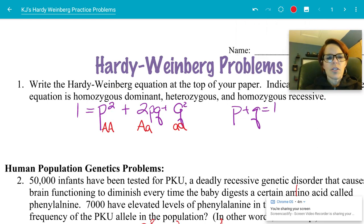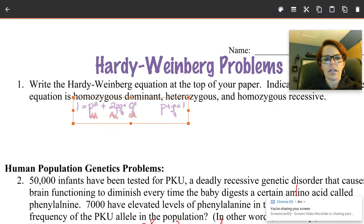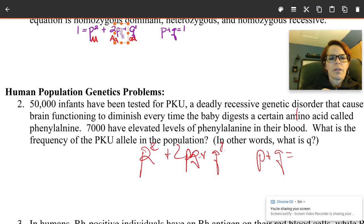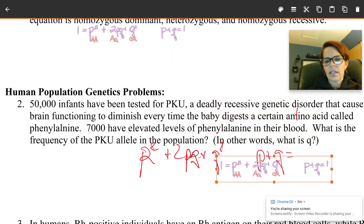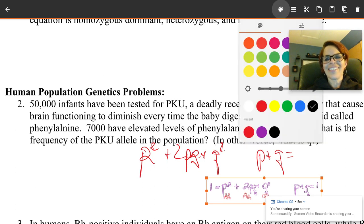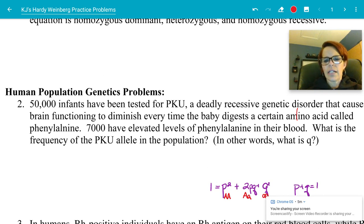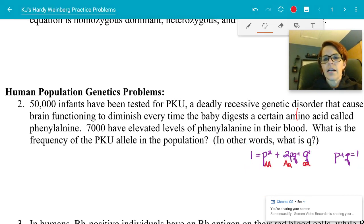I want us to remember what p squared, 2pq, and q squared stand for. Using the letter A: p squared represents the homozygous dominant — two capital letters. The 2pq part are the heterozygotes — one big and one little. And q squared is the homozygous recessive — two lowercase letters. I'm going to reference back to this equation over and over again, so I'm going to move it off to the side while we work.